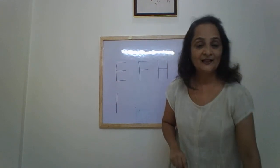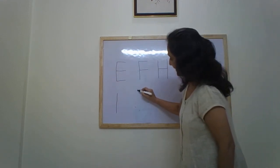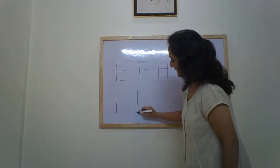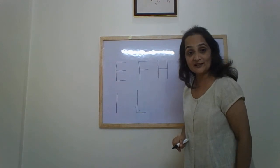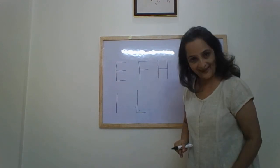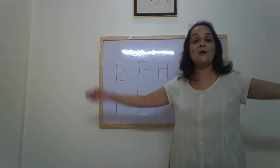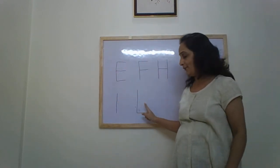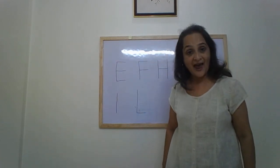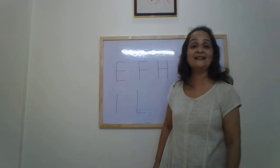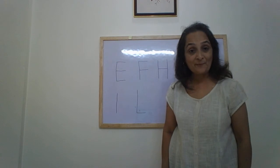The other letter is standing line, sleeping line, sleeping line — which letter? L. This is letter L. L makes the sound L. L for lion, lamb, legs, lotus, leaf, leopard.